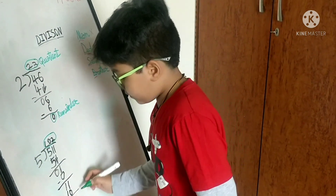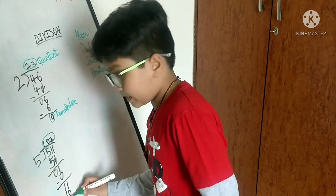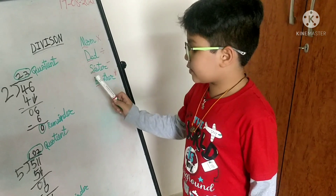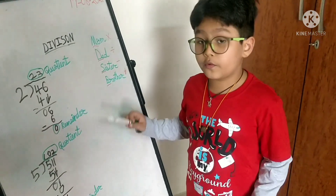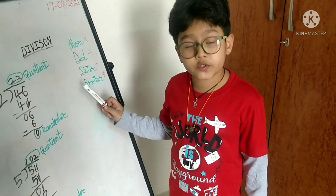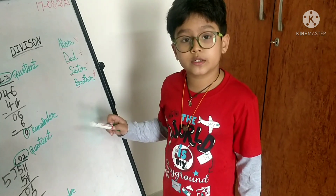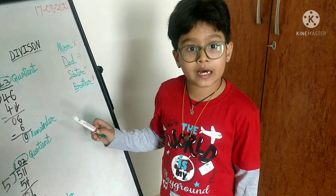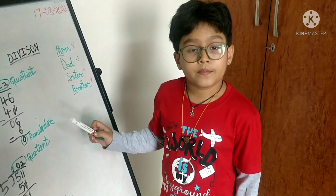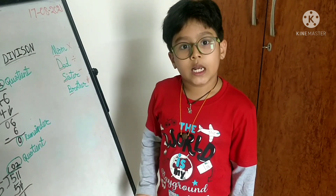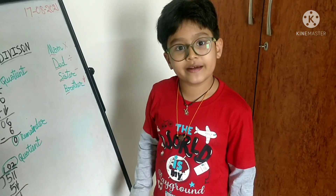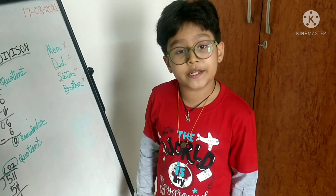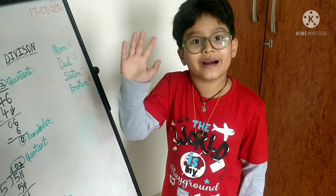So our quotient is 102 and our remainder is 1. So like this, with these 4 easy words you can do division. Before that you must learn your tables. I hope you all liked today's division class. Please don't forget to like, share, and subscribe to my channel for more updates. Thank you. Bye bye!